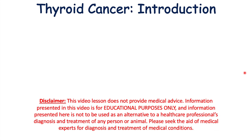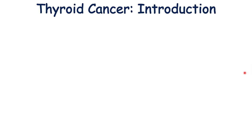This lesson is on thyroid cancer. We're going to talk about the types of thyroid cancer, some of the pathophysiology behind why thyroid cancer occurs. We're also going to talk about the signs and symptoms, how it's diagnosed and staged, and how it's treated.